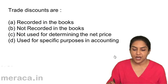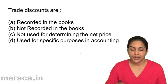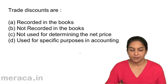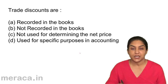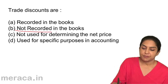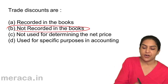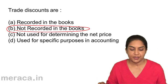Trade discounts are: a) recorded in the books, b) not recorded in the books, c) not used for determining the net price, or d) used for specific purposes in accounting. Trade discounts are simply not recorded in the books. Not recorded in the books. Correct answer: b.